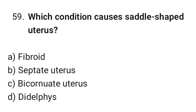Question number 59: Which condition causes a saddle-shaped uterus? The correct option is C: Bicornuate uterus.